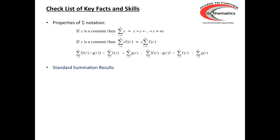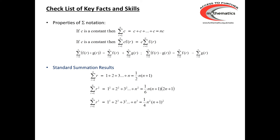We also need to be familiar with three standard summation results. The first one, for the sum of the positive integers between 1 and n, can be regarded as the sum of an arithmetic progression — it's not given in the formula booklet. The other two results, for the sum of squares and the sum of cubes of the positive integers between 1 and n, are given in the formula booklet.